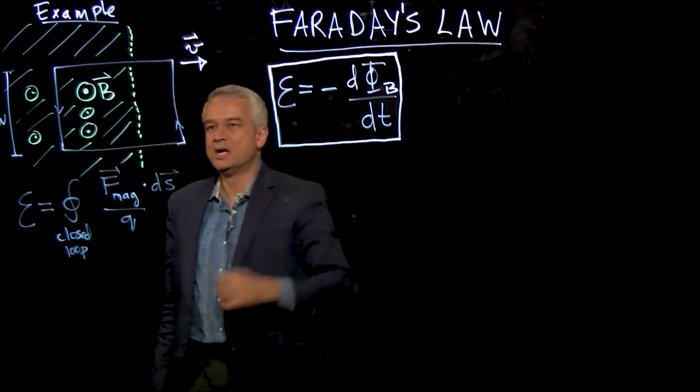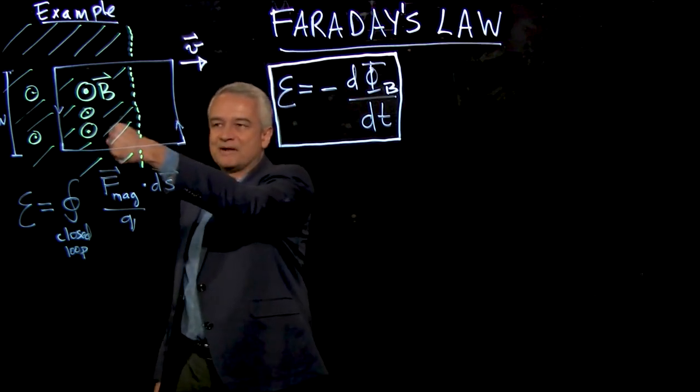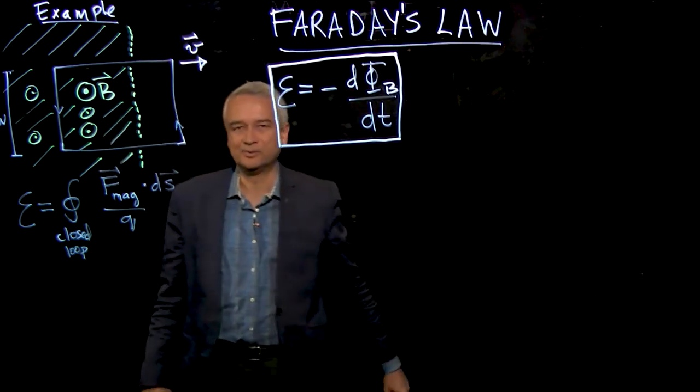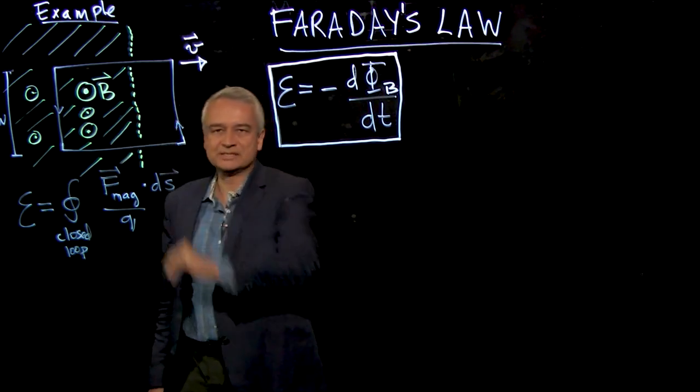So if the magnetic flux through the loop is changing, which it was because I was pulling the loop out of the field region, then as the magnetic flux through the loop was decreasing, that induced an EMF around the loop. So that's what we derived last video for this special case, for this example.